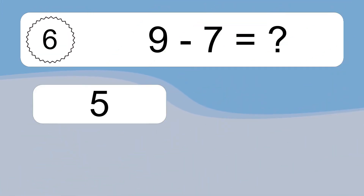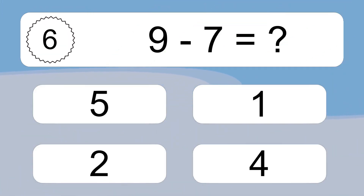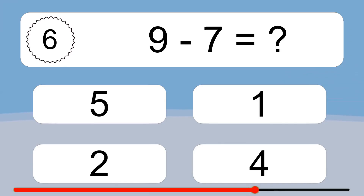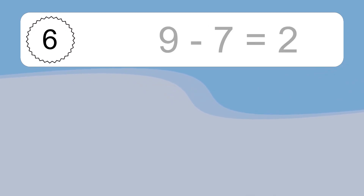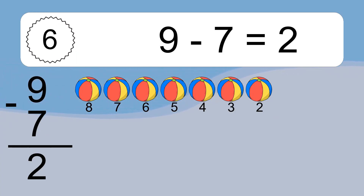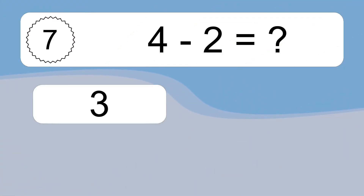3 minus 1 equals what? 3 minus 1 equals 2. Let's count it: 2. 9 minus 7 equals what? 9 minus 7 equals 2. Let's count it: 8, 7, 6, 5, 4, 3, 2.